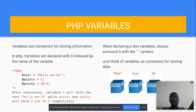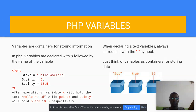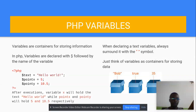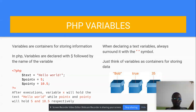In PHP a variable is declared with the dollar sign. So if you want to declare a variable in PHP it has to start with the dollar sign and then the variable name. An example: you have $text equal to 'hello world', $x equal to 5, $y equal to 10.5.